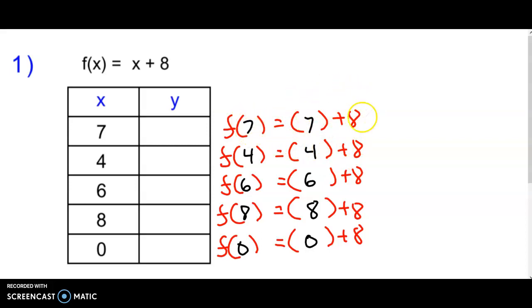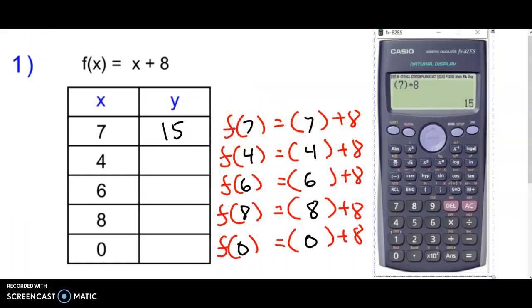When I'm done I can say f of 7 is equal to the answer, f of 4 is equal to the answer. I'm going to pull up the calculator and type in 7 plus 8. I get 15. So instead of just saying x is 7 and y is 15, if you saw this without the table you would say f of 7 is equal to 15.